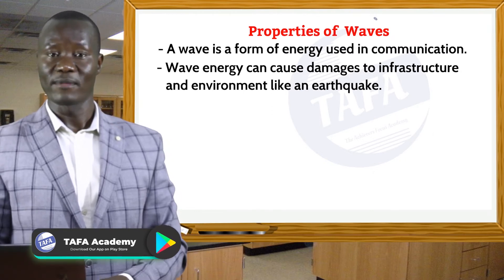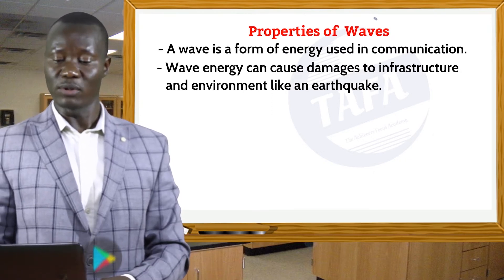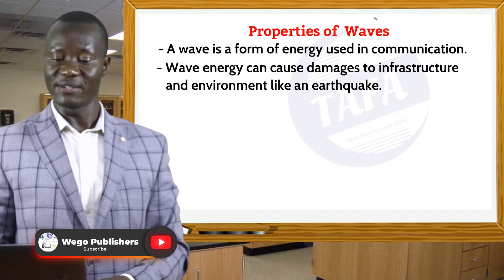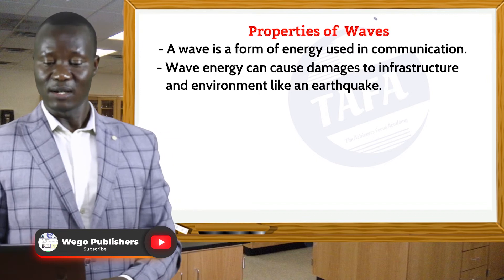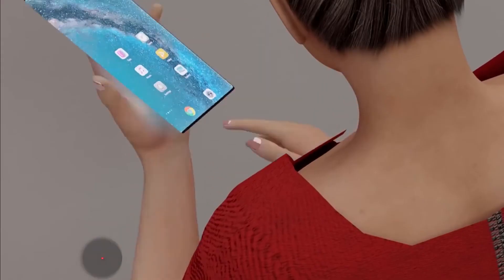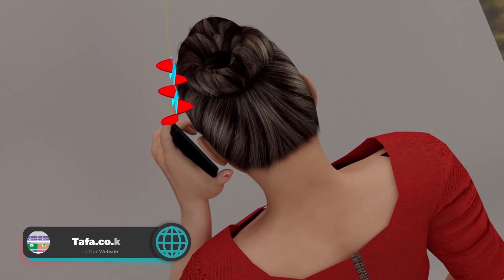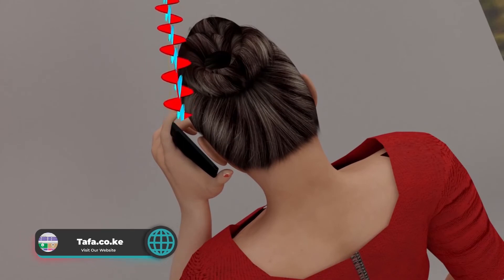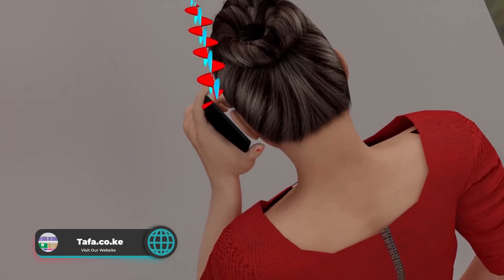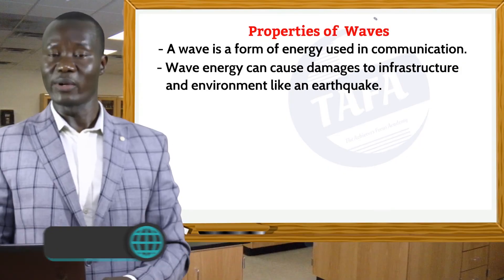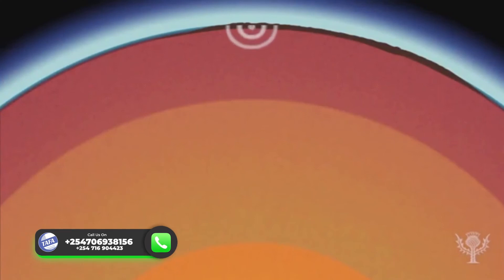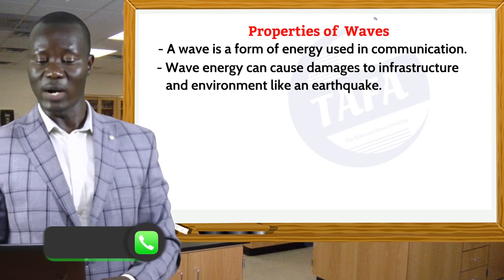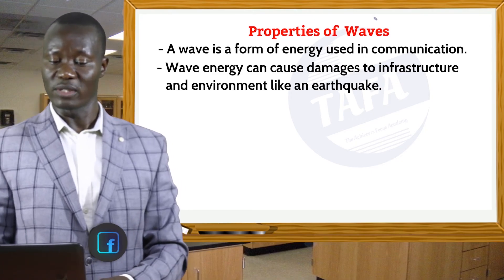So waves are able to do work — it can be destructive work or constructive work. Constructive work includes their use in communication using radio waves, and microwaves in cooking. The destructive elements of waves include earthquakes, and strong whirlwinds can also cause a lot of destruction.